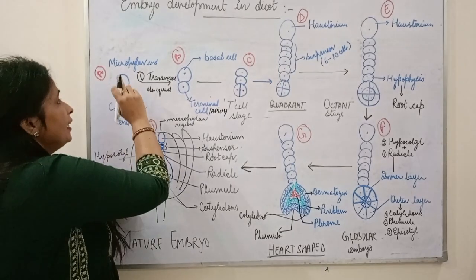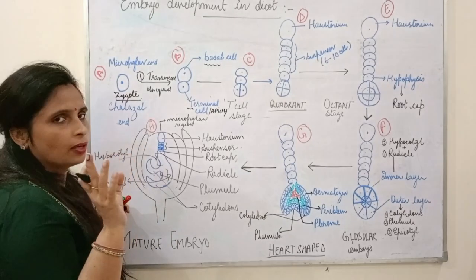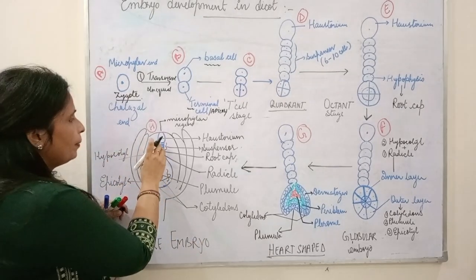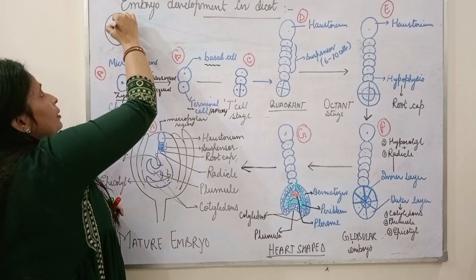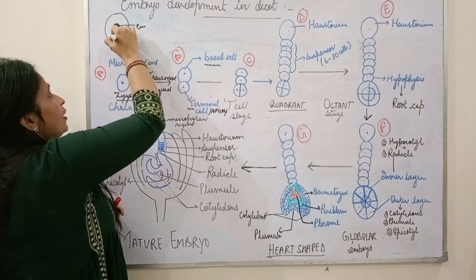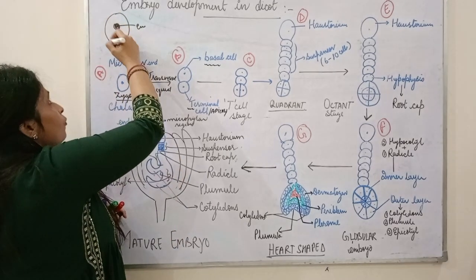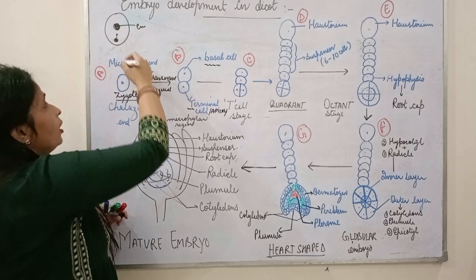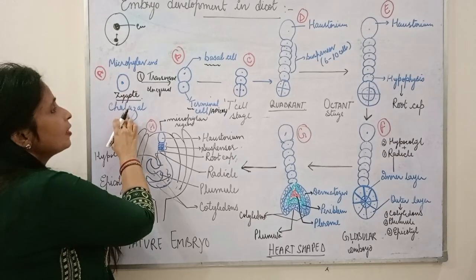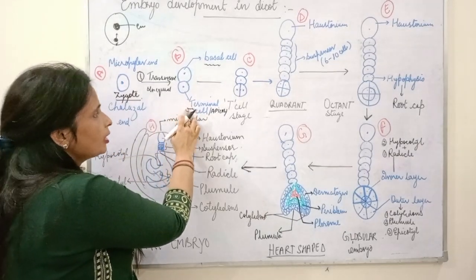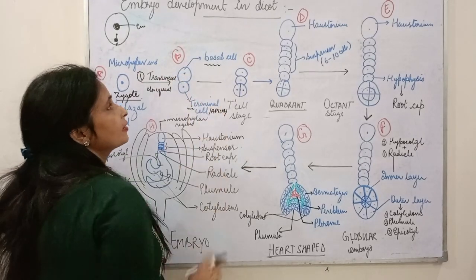We should remember that the end of the cell will be the basal cell and the other end will be the terminal cell. The chalazal end will be the terminal cell and the apical cell which is small, and the micropylar end will be the basal cell. This is called the two-cell stage.